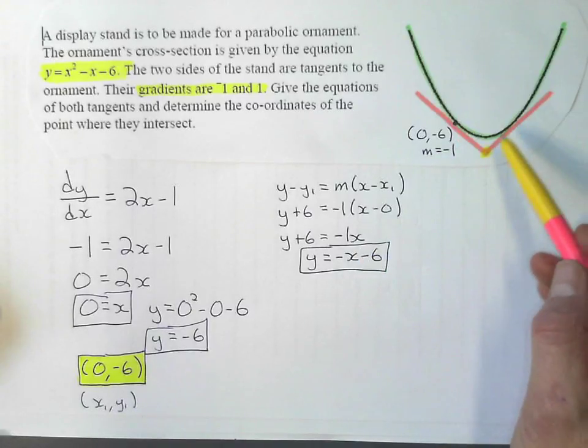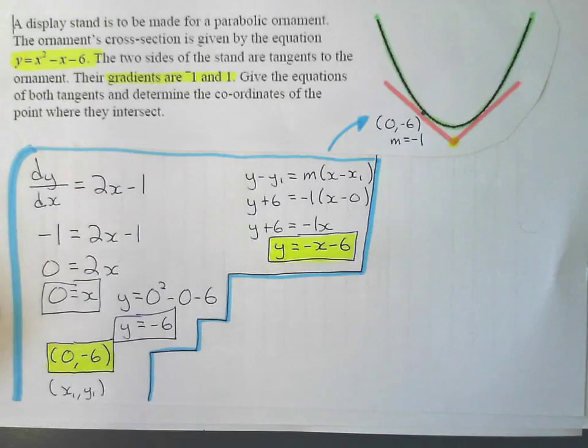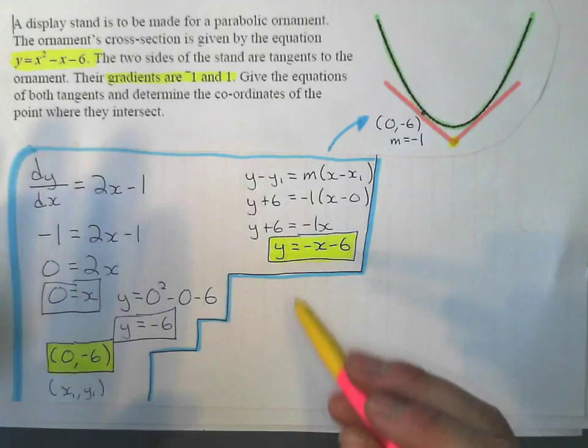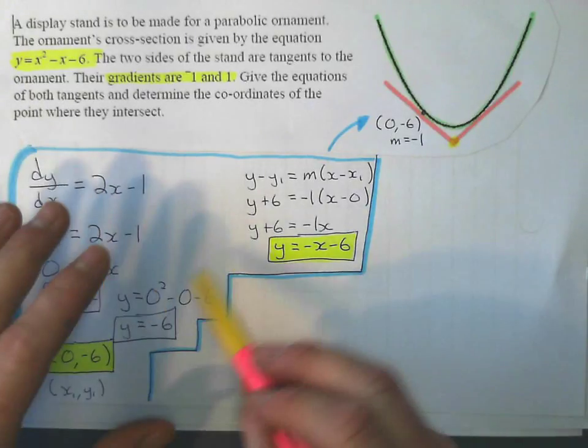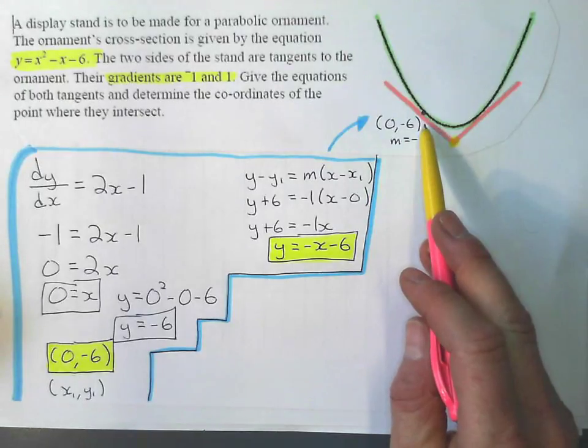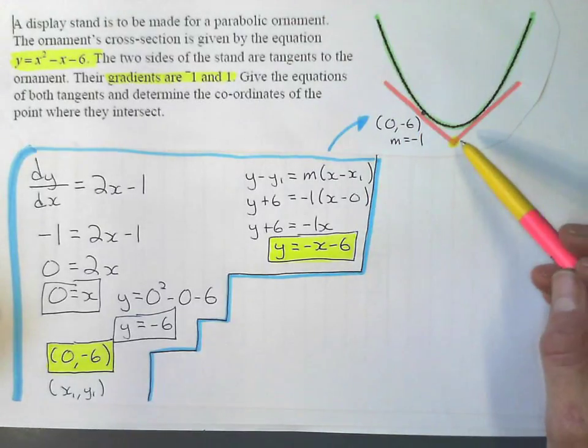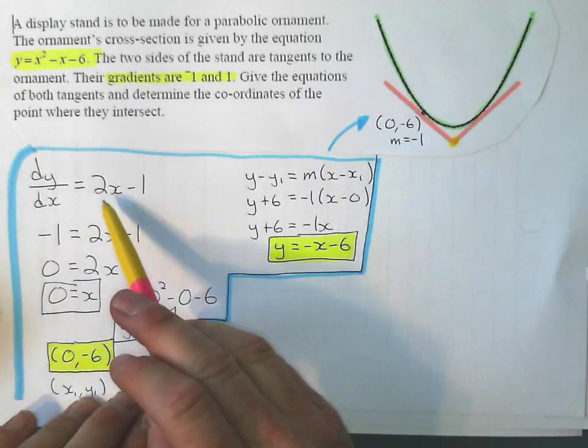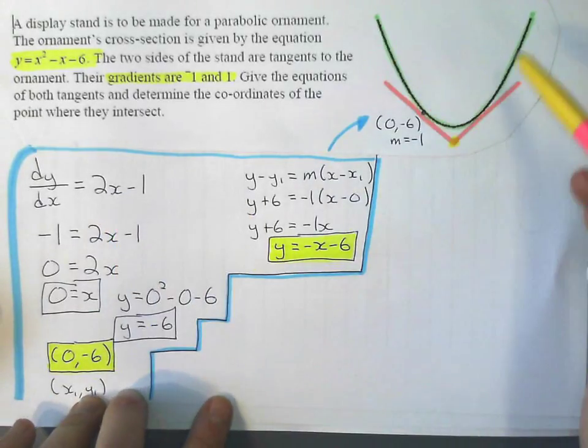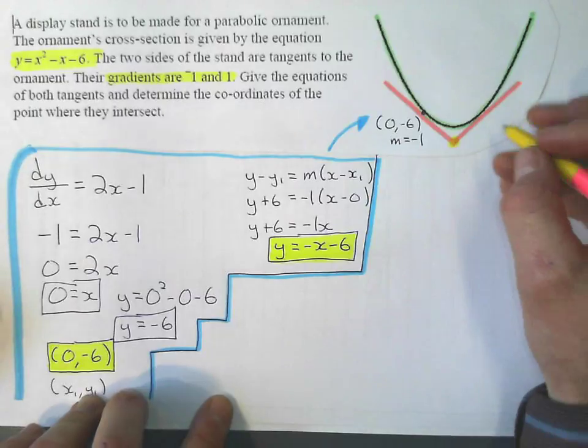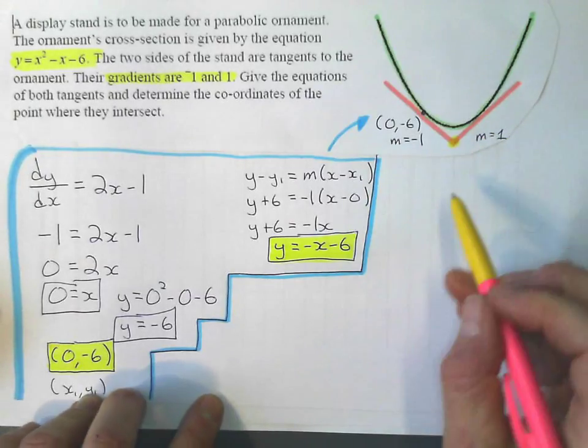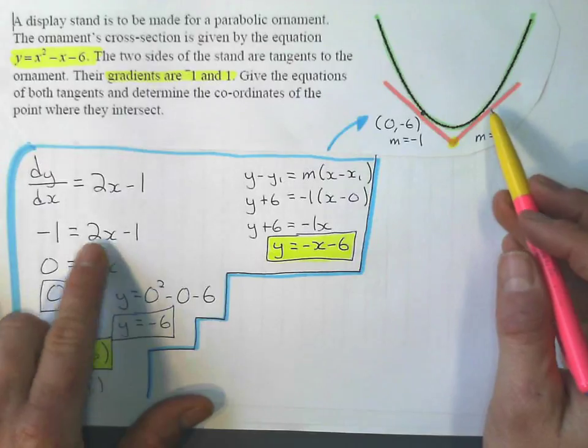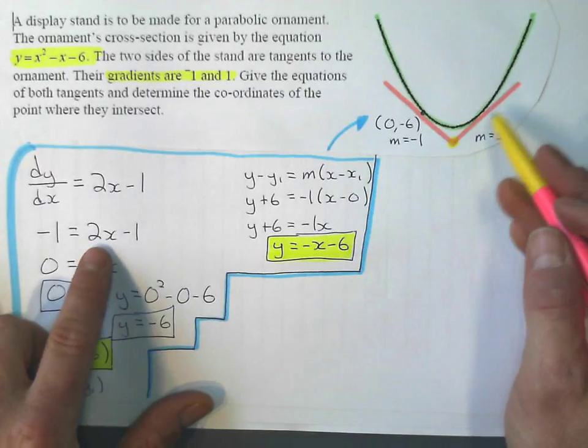I do the same thing for this tangent line right here. I separated all this to show that all of this work is for this tangent line. Now do the same for this tangent line. It has the same gradient function because this 2x - 1 is for the whole curve. The only thing different is that this gradient is a positive 1. So instead of setting the gradient function to negative 1, I set it for positive 1.